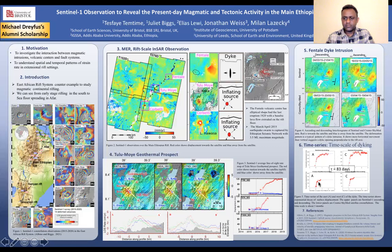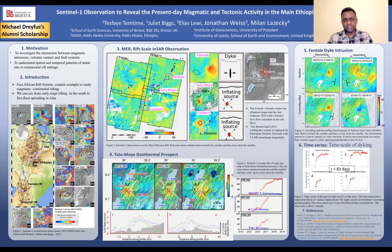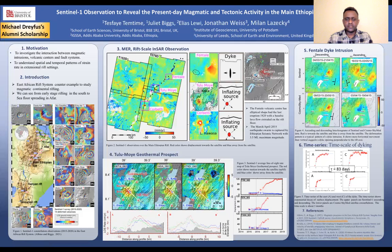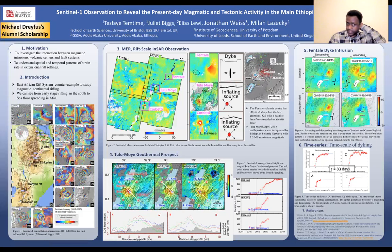This kind of observation cannot be made without Sentinel-1 observations — without them, we could not have detected such activities in this part of the world. The take-home point is how Sentinel-1 observations are vital in assessing geohazards, and in understanding what is going on in the East African rift system, particularly in the Main Ethiopia rift and in Afar, where there is not much in-situ measurement available.